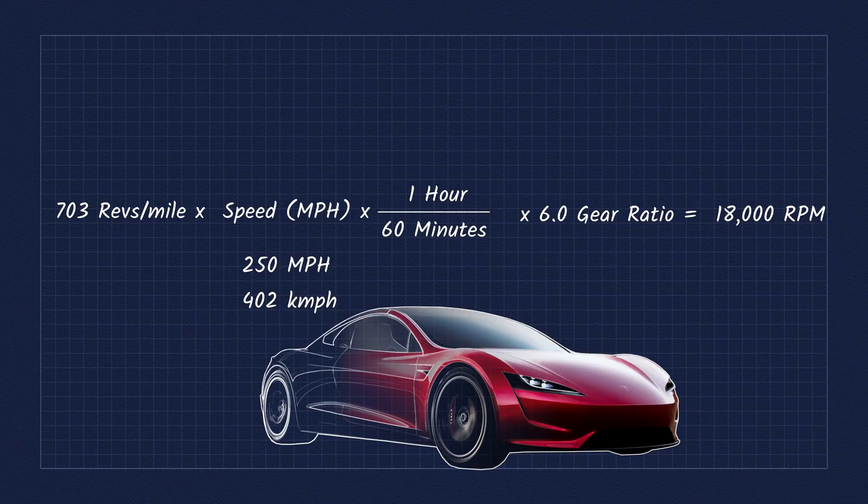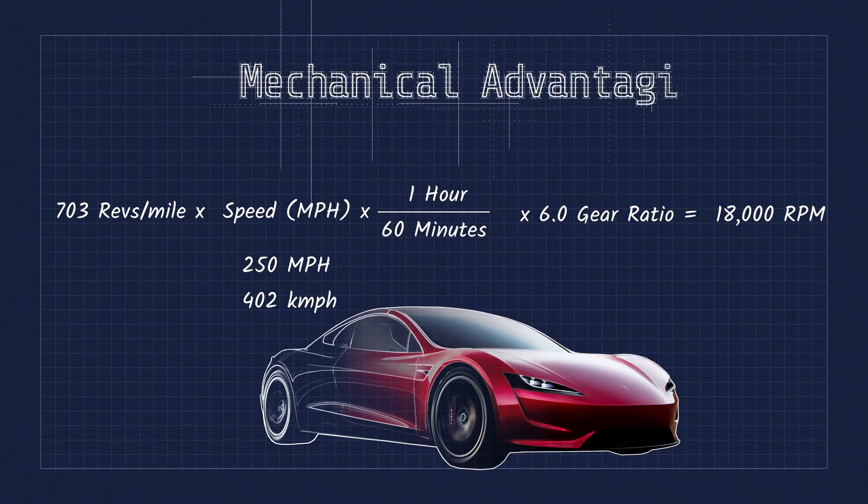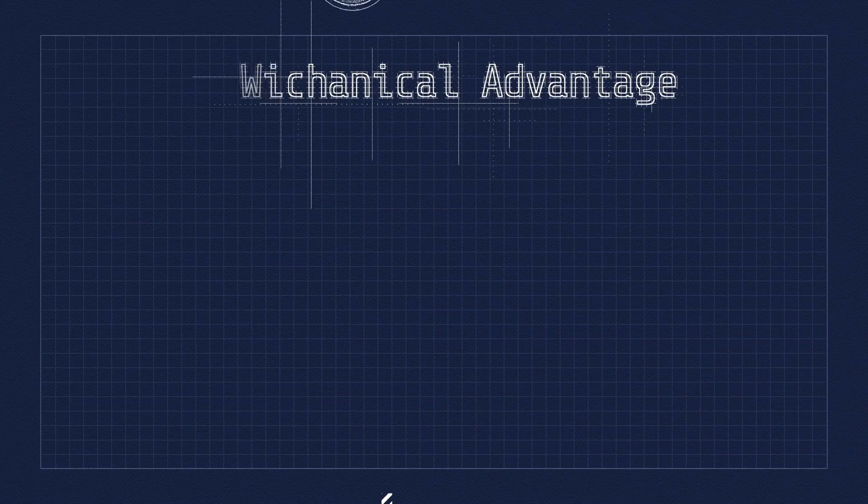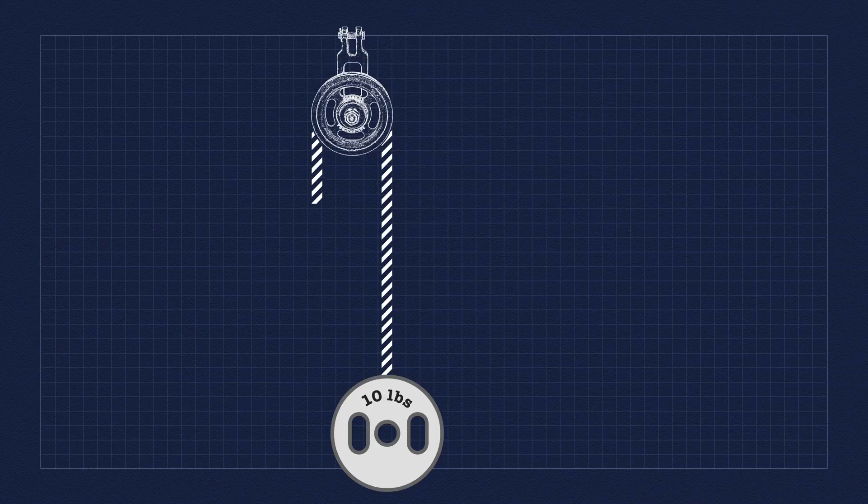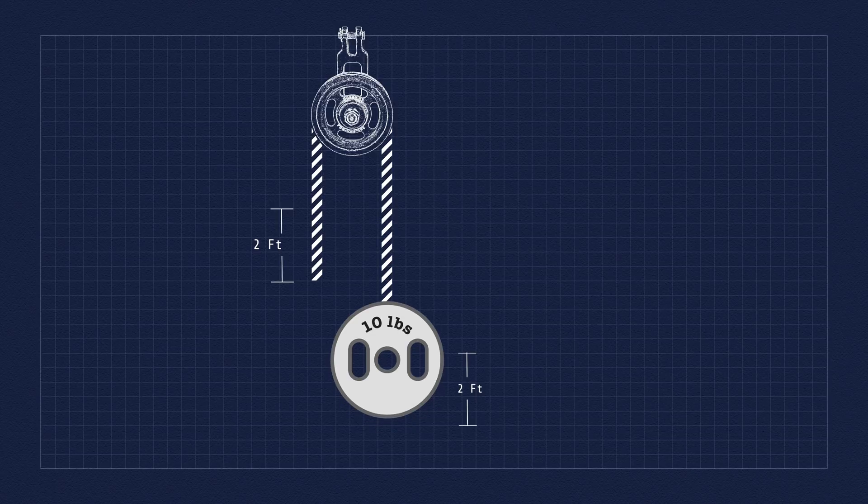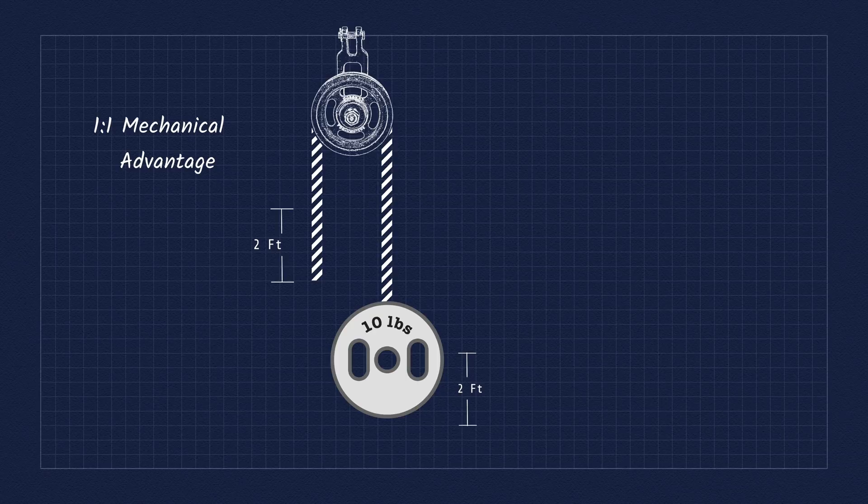If you're wondering why all EVs don't just use lower gear ratios, well, that's because of a phenomenon called mechanical advantage. Imagine you're trying to lift a 10-pound load attached to a rope around a single pulley. If you pull down on your end of the rope 2 feet, you'll have to apply 10 pounds of force to lift the 10-pound weight 2 feet. This represents a 1-to-1 mechanical advantage.